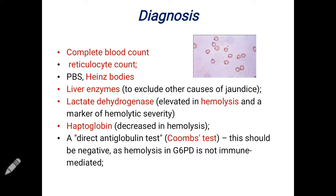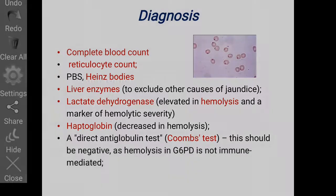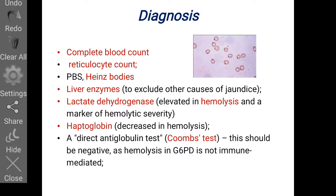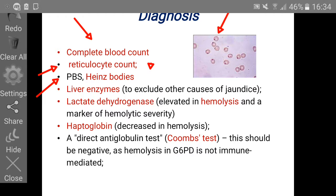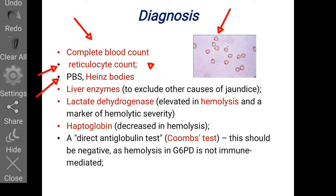To diagnose a patient with G6PD deficiency, we first perform a complete blood count, which may show anemia due to excessive destruction of RBCs. Reticulocyte count will be increased due to increased bone marrow activity in response to excessive RBC destruction. On peripheral blood smear, we can see Heinz bodies. We can also perform liver enzyme tests to exclude other causes of jaundice.